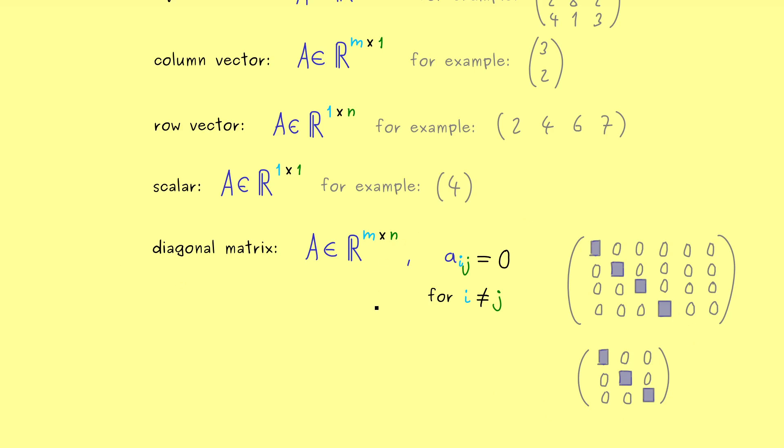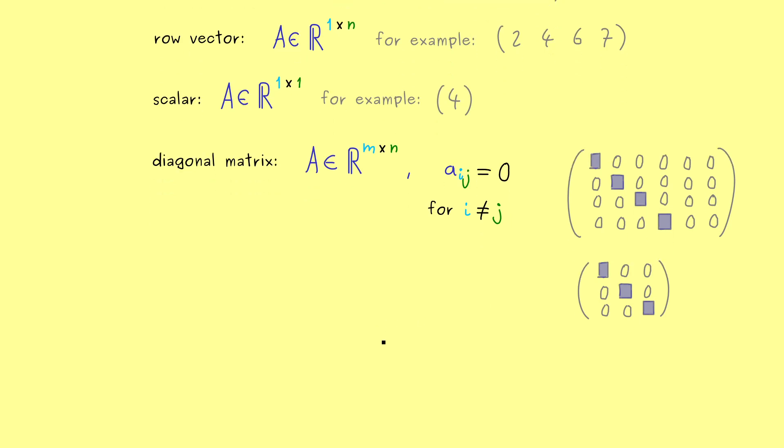Ok and now there are also other special square matrices that will be important later. For example we can talk about so called upper triangular matrices. There as the name suggests the form of the non-vanishing entries of the matrix should form an upper triangle.